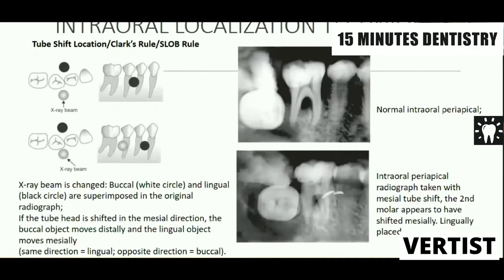In total localization technique there is a very useful method known as the tube shift technique, also called the Clark's rule or SLOB rule — SLOB stands for Same side Lingual, Opposite side Buccal. If you want to know whether an impacted molar is placed buccally or lingually, take a second radiograph and shift the tube mesially. If the tooth also shifts mesially, it is on the same side — meaning it is lingually placed. This is a helpful guide to the surgeon.